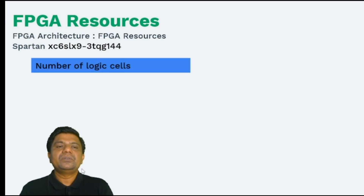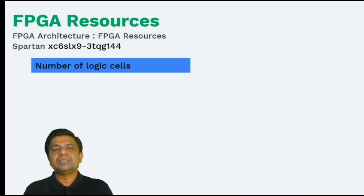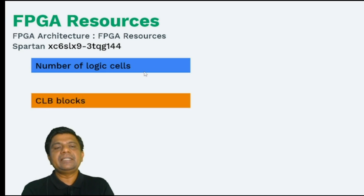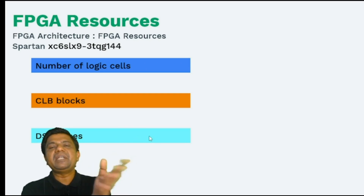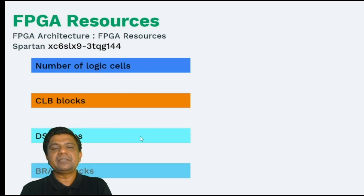The important resources to consider are: how many logic cells the FPGA has — the name LX9 indicates around 9000 logic cells; how many configurable logic blocks; how many DSP slices, used for dedicated DSP applications like multiplication and digital signal processing; and whether this FPGA has BRAMs — block RAMs — which are blocks of dedicated memory.